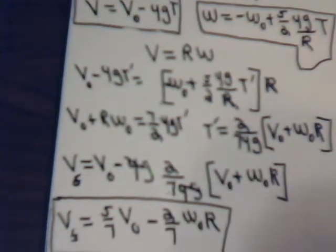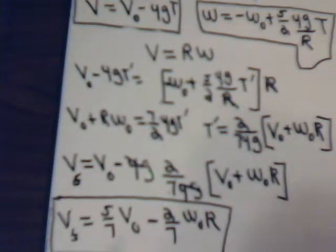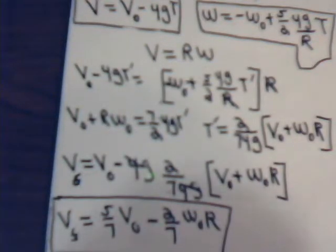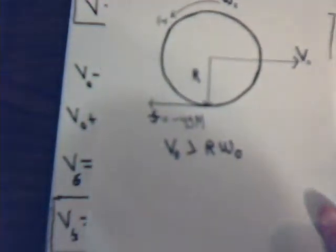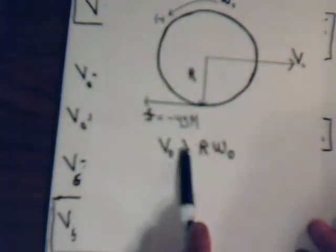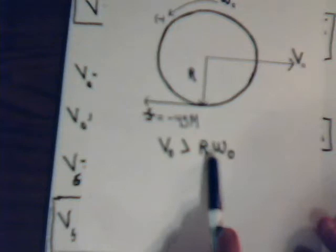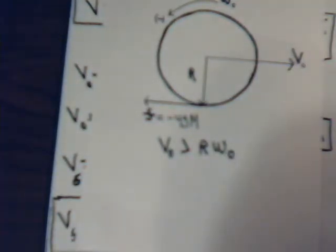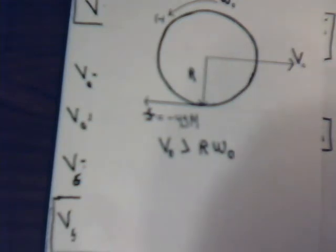That's it for this video. This is how we approach the backspin problem using kinematics. In the next video, we'll consider the same problem — a bowling ball with a forward linear velocity and a backward angular velocity, with V-naught still greater than R times omega-naught — but this time we'll see what information we can obtain by using conservation of angular momentum instead.